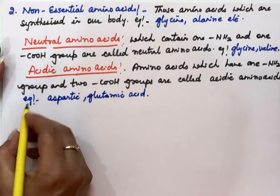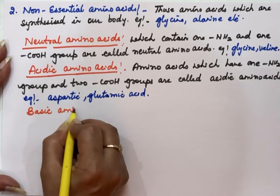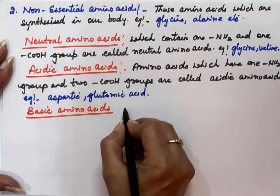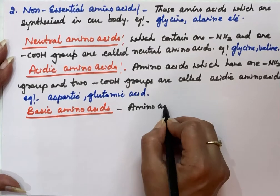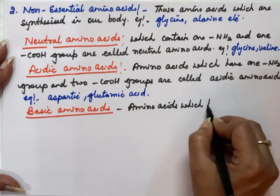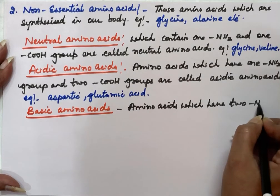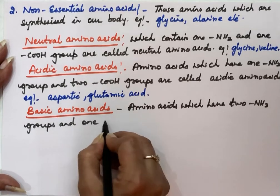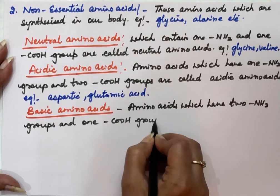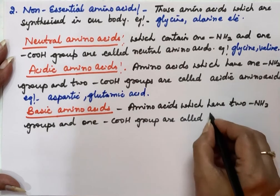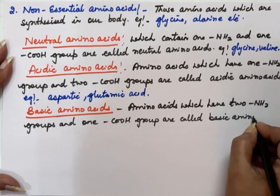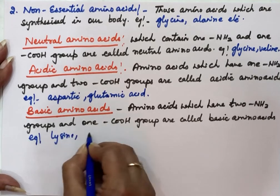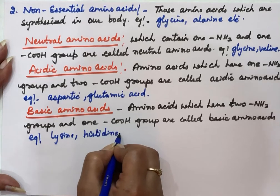The third type is basic amino acids. These are amino acids which have two NH₂ groups and one carboxyl group. Examples of basic amino acids are lysine and histidine.